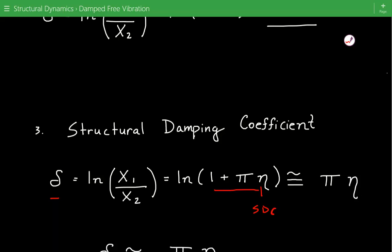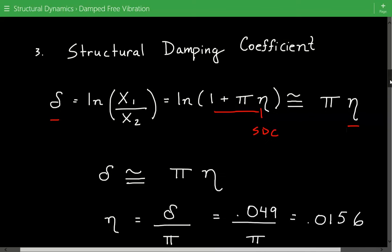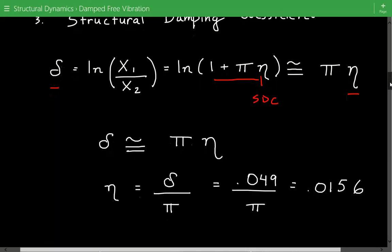And that's approximately equal to pi times the structural damping coefficient. So to make things easier we'll just use the relationship that delta is approximately equal to pi times the structural damping coefficient.